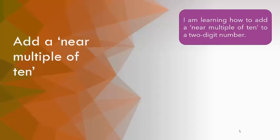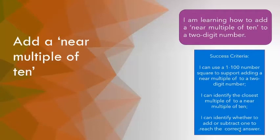I am learning how to add a near multiple of 10 to a two-digit number. Remember that a two-digit number is a number between 10 and 99 with two numbers in it. By the end of the lesson, you would be able to use a number square to support adding near multiples of 10 to a two-digit number.